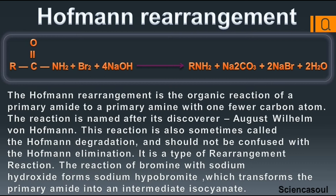It is a type of rearrangement reaction. The reaction of bromine with sodium hydroxide forms sodium hypobromide, which transforms the primary amide into an intermediate isocyanate.